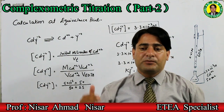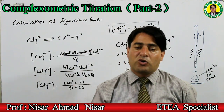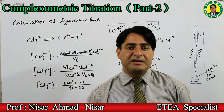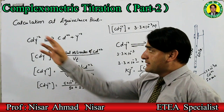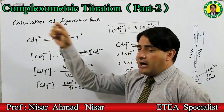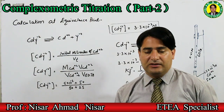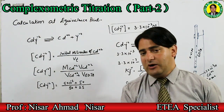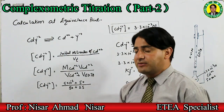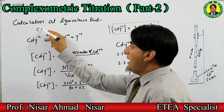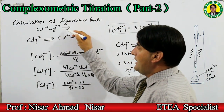Equivalence point سے پہلے ہم cadmium ion کی concentration find کرتے تھے اور اس cadmium ion concentration سے pCd find کرتے تھے۔ اب ہم بات کرتے ہیں pCd یعنی negative log of cadmium ion at equivalence point۔ Equivalence point پہ جتنا بھی cadmium ion تھا، جب ہم نے EDTA ڈالا تو۔